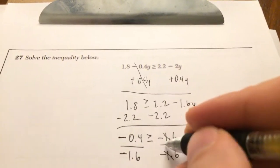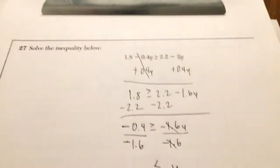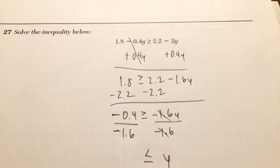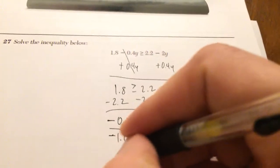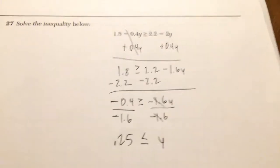Divide both sides by negative 1.6. Now, keep in mind, when you're dividing by negative, you have to flip this around. I get a positive 0.25.